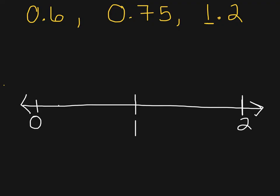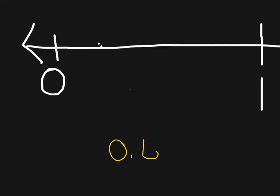Let's actually put these numbers on our number line now, and let's start with six tenths. For six tenths, that means we need ten spaces between the zero and the one, because ten tenths make up one whole. The tenths place in the decimal is kind of a giveaway to how many spaces we need between zero and one. Let's zoom in between our zero and one. I like to have a halfway point first — halfway between zero and one is five tenths — so we already have half of our work cut out for us.